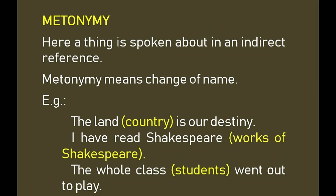Metonymy: a thing is spoken about in an indirect reference — metonymy means change of name. The actual name is not used; instead, any other word related to it is used. For example, 'the land is our destiny' — here 'land' means the native country. 'I have read Shakespeare' — Shakespeare means the works of Shakespeare. 'The whole class went out to play' — 'the whole class' refers to the students.